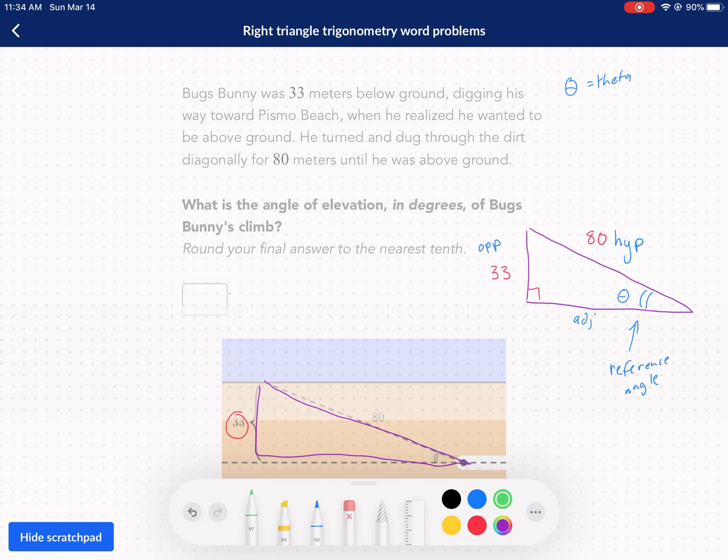That changes if your reference angle is over here. If it's over here, then your opposite side is over here because it's opposite, and your adjacent side becomes over here. That's not the case in this problem. That's not where the reference angle is. I just wanted to tell you, you have to be mindful where your reference angle is, and then label your triangle appropriately.